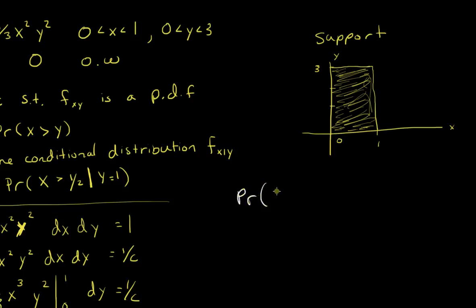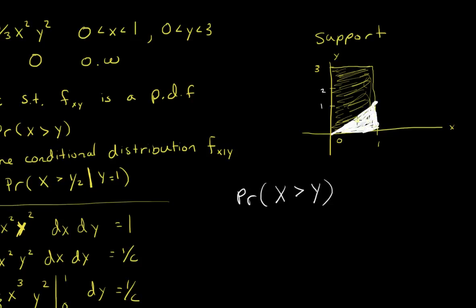I'm trying to find the probability that x is greater than y. Where is x equal to y? That's on the line x equals y. Where is x greater than y? Down here — x is greater than y below that line. Up here, x is less than y. For example, at x = 1/2, down here y is less than 1/2, so x is greater than y in that lower region. So I want to integrate over that region.